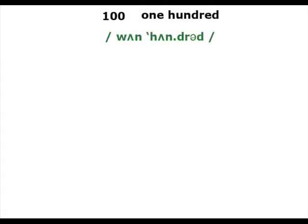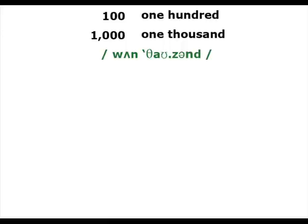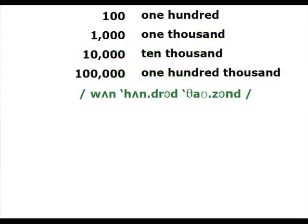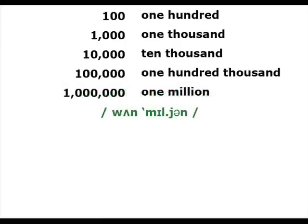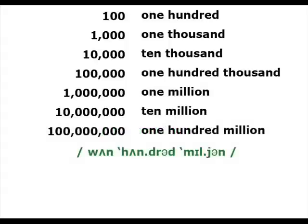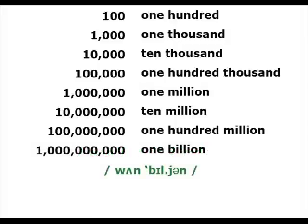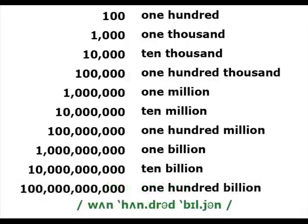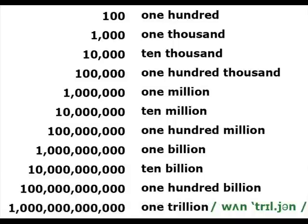One hundred. One thousand. Notice that the last syllable of thousand is not pronounced 'sand' — it's an unstressed syllable and pronounced 'zund'. Thousand. Ten thousand. One hundred thousand. One million. Ten million. One hundred million. One billion. Ten billion. One hundred billion. And one trillion.